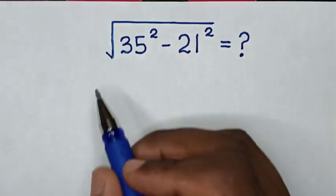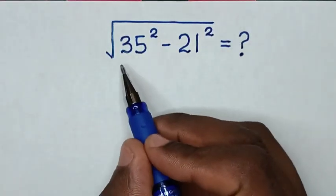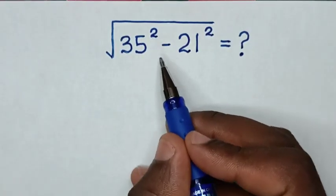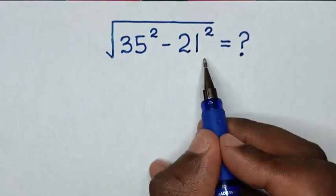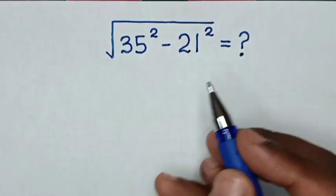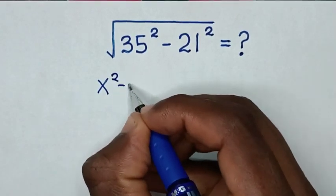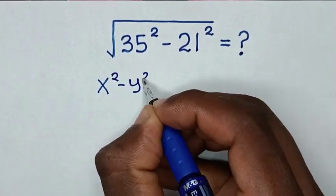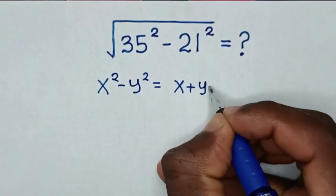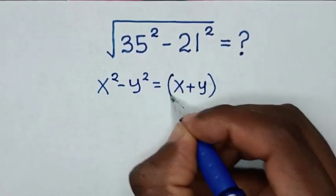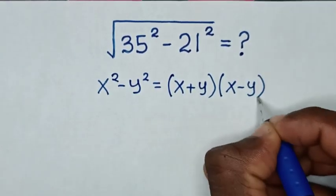Hello. How to solve square root of 35 squared minus 21 squared. This expression under the square root is in the form of x squared minus y squared, which equals x plus y times x minus y.